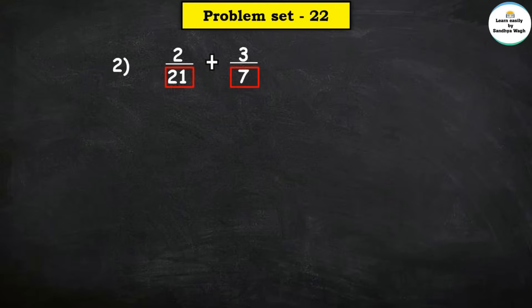7, 3s are 21. So the first fraction, 2 upon 21, stays as it is — current denominator is already 21. Plus 3 upon 7: multiply denominator 7 by 3 to get 21.